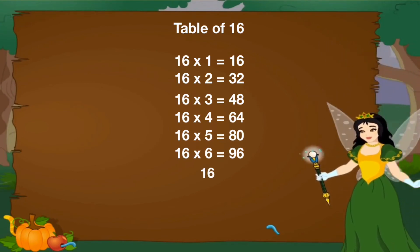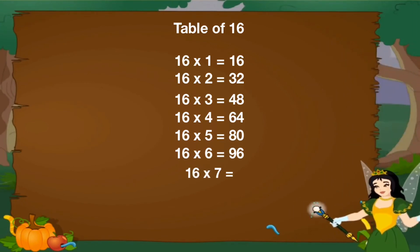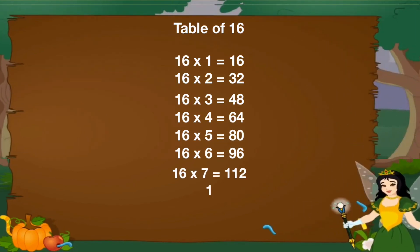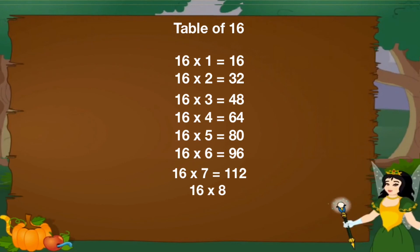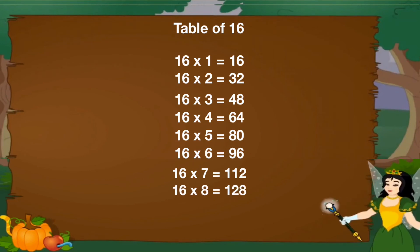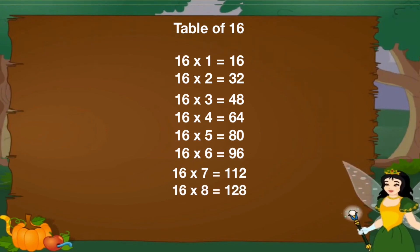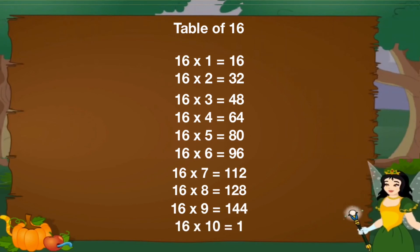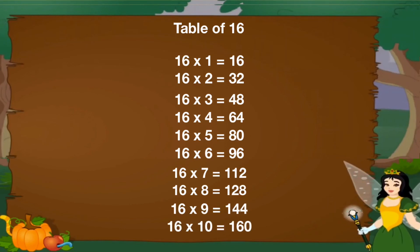16 sevens are 112, 16 eights are 128, 16 nines are 144, 16 tens are 160.